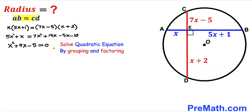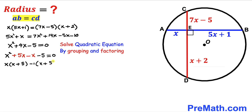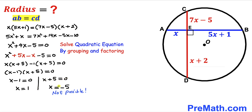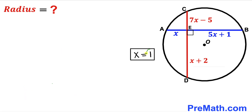We solve this quadratic equation by grouping and factoring. Focusing on the middle term 4x, we rewrite it as 5x minus x, giving us x times (x plus 5) minus 1 times (x plus 5) equals 0. Separating the two factors: x minus 1 equals 0 and x plus 5 equals 0. Since x represents a length, x cannot be negative, so we reject x equals negative 5 and accept x equals positive 1.